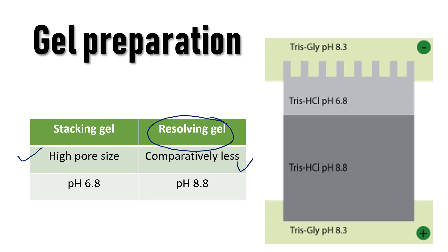Another difference between the stacking gel and the resolving gel lies in the pH. The stacking gel is buffered with Tris and the pH is adjusted to 6.8, whereas for the running or resolving gel the pH is adjusted to around 8.8. The running buffer is Tris-glycine, which is adjusted to pH 8.3. We'll understand the importance of this pH difference in SDS-PAGE.